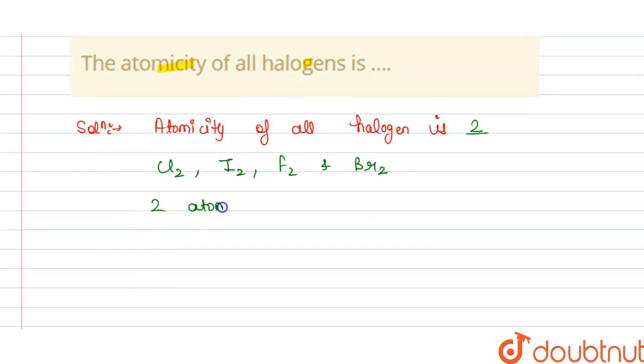So 2 atoms of halogens together form a covalent bond, a covalent compound, this is covalent compound and this is known as atomicity.